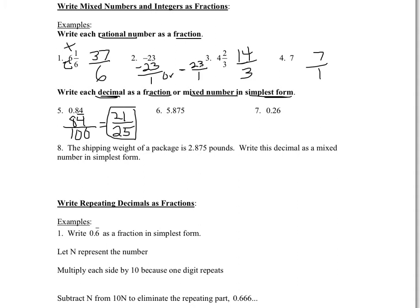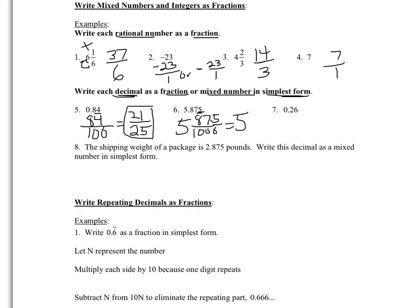Here again, it's all about place value. This is obviously going to be a mixed number because we have a whole number part. 5 and 875 thousandths — so we're going to have a 5 for our whole number. This 875 ends in the thousandths place, so we're going to put 1,000 in the denominator and 875 in the numerator. Then we need to simplify: we can divide both 875 and 1,000 by 125. 1,000 divided by 125 is 8, and 875 divided by 125 is 7. So simplest form is going to be 5 and 7 eighths.